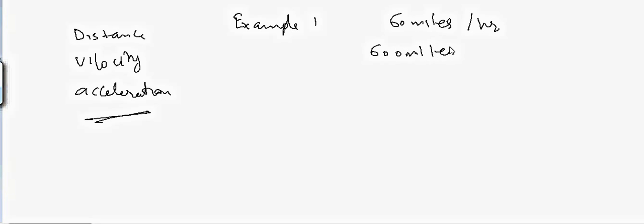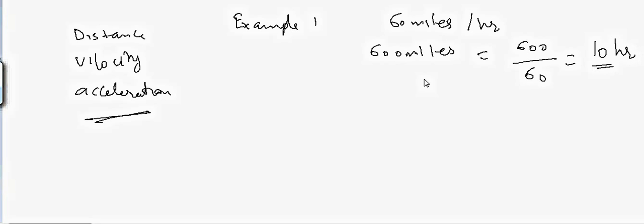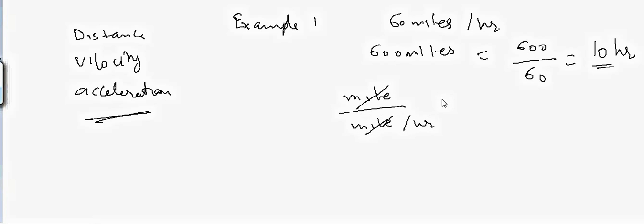That will be equal to 600 divided by 60, which is 10 hours. If you look at the units, we divided miles by miles per hour — miles cancel and we are left with hours. So if you take care of the units, you won't make any mistakes.